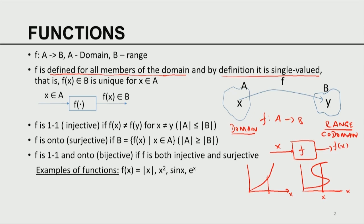That is the broadest possible way one can define functions. There are special classes of functions. F is called 1-to-1 or injective — if x is not equal to y, then F of x is not equal to F of y. That means distinct points are mapped into distinct points in the range. F is called onto or surjective, meaning F maps all the points of A onto a complete set B. F is called bijective if it is both injective and surjective.